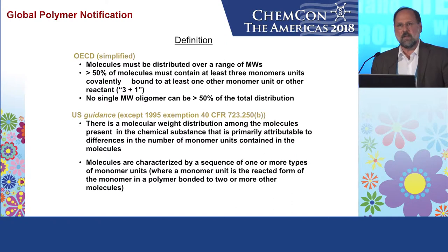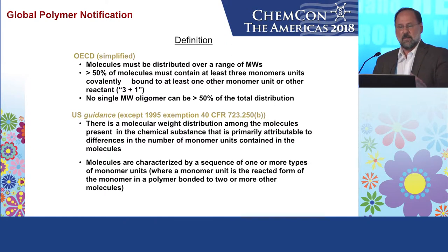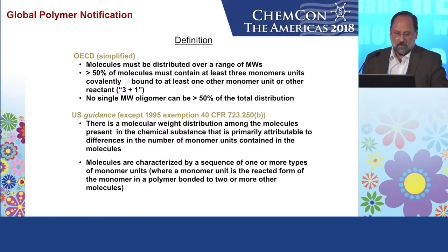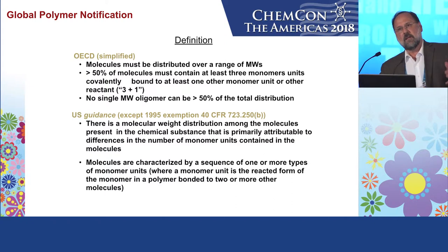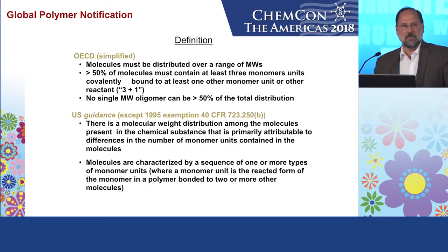If you don't meet any one of them, you're not a polymer. Also, in some countries there are additional requirements — in Japan and Australia, your number average molecular weight has to be at least 1,000. But generally, globally, if you meet this definition, lucky you — you're a polymer. Except the US has to be different. Under TSCA, there is no statutory definition of a polymer, except for the 1995 exemption, which incorporated the OECD definition.